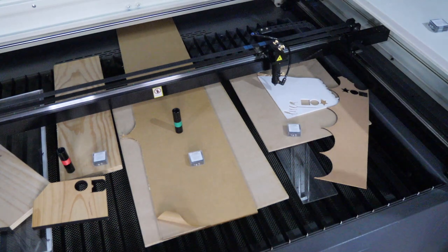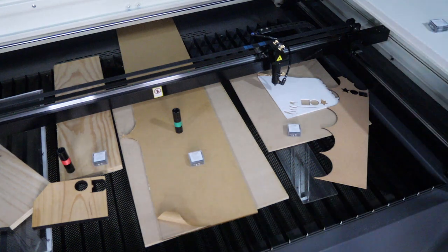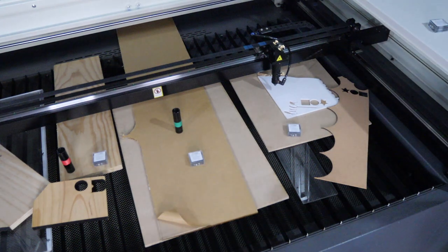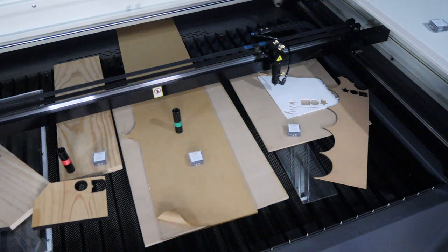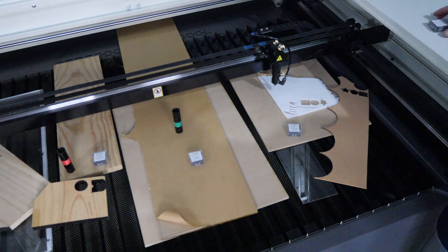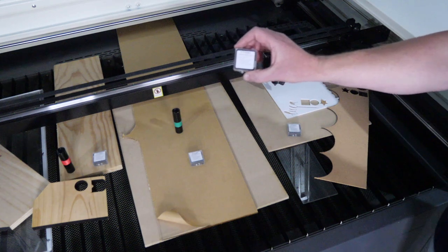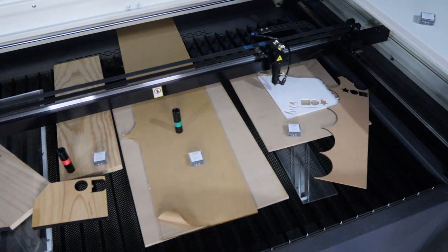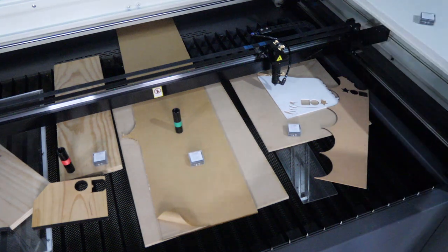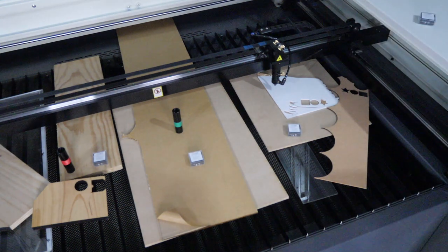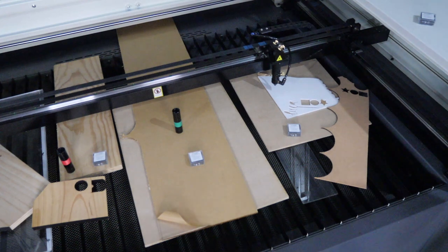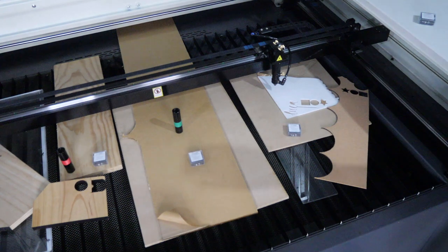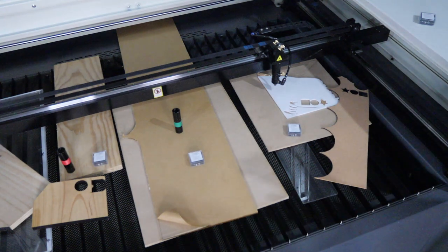Now the lens that you choose depends on the type of material that you're trying to process, whether you're engraving or cutting. If you're engraving and you want very high fine quality detail, high resolution images, then you'd be better off using something like a 1.5 inch lens. Now the 1.5 inch lens is a very small spot size, so it can do high detailed and high resolution images and very fine text engraving with accuracy. However, the focal tolerance is very small, so it's very important that you have it very well focused when you're doing that sort of work.